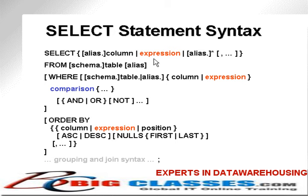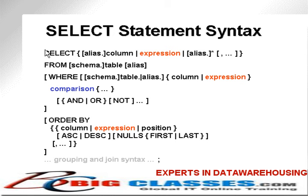The where clause is used to filter — to retrieve the records we want and filter out the records we don't want. You could apply something in a where clause that says go and select from a table where a value is set to one particular thing, and theoretically you could find a single record. The order by clause is simply sorting the output. The where clause would be applied to filter the data, and then the order by clause would be applied to the filtered rows, ordering them by columns, expressions, positions, etc. I'm just showing you a slightly more complex version of the select statement syntax to introduce it in small pieces.